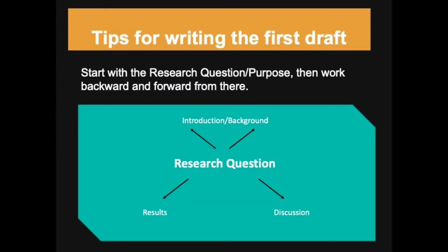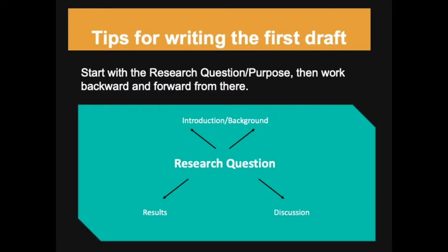It's going to help you tremendously to have a writing plan and an outline to get started. You may adjust your outline later as we get into each of the specific sections, but at least have something to get started with. A good place to start is with the research question, then work backwards to determine exactly which background information you need in the introduction to funnel down to those knowledge gaps that will reveal your research question. From the research question you will also work forward to the results and to the discussion section.